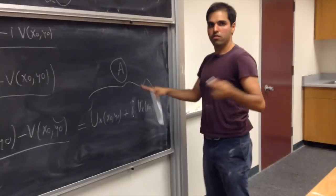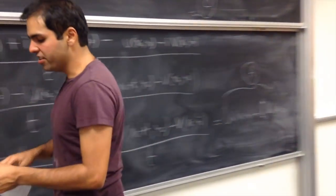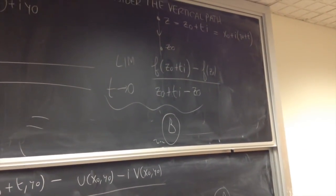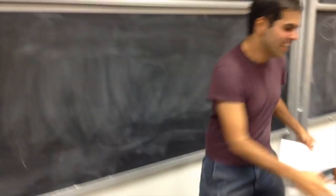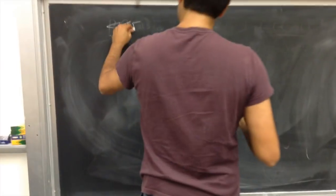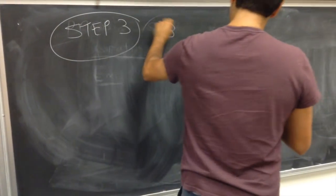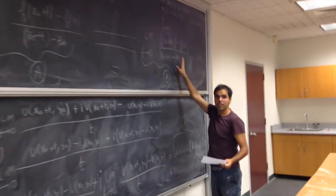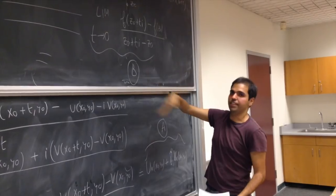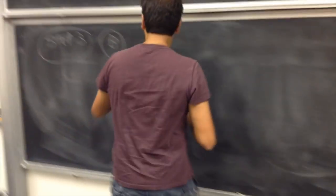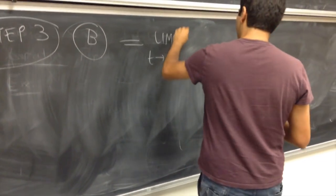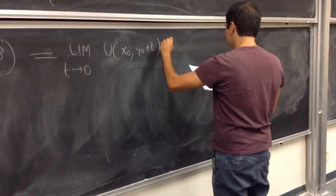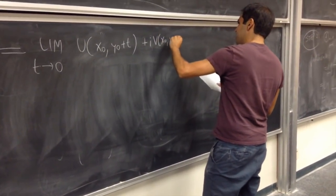So a equals u_x plus i times v_x, evaluated at x-naught y-naught. That's one piece of the equation. Now let's do the calculation for b — step three. For b, you do the same thing again. You have this limit; instead of writing f, we write u plus iv. So b equals the limit as t goes to zero of u of x-naught, y-naught plus t, plus iv of x-naught, y-naught plus t — here we're increasing the imaginary part.